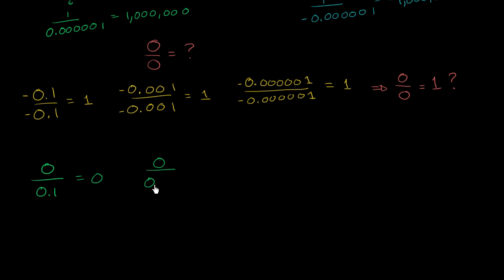0 divided by 0.001. Well, that's also going to be 0. And it didn't matter whether we were dividing by a positive or a negative number. Make all of these negatives, you still get the same answer.